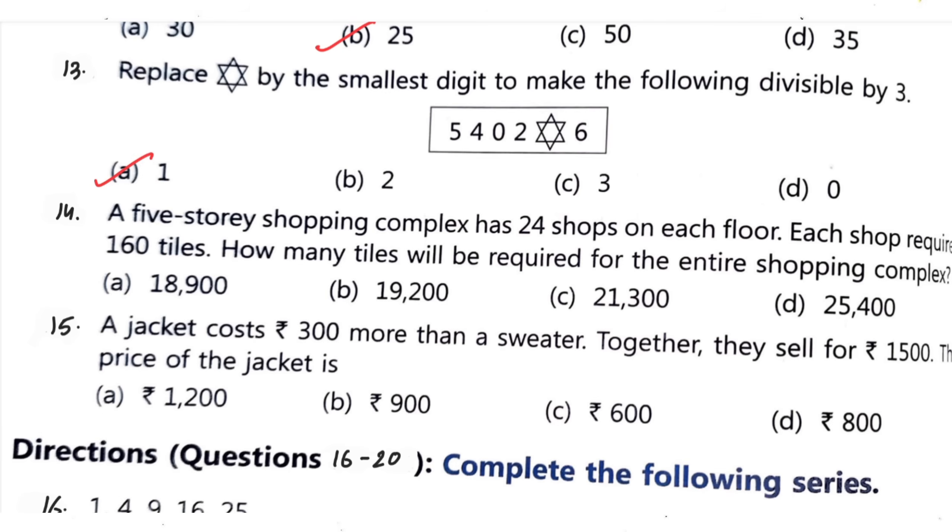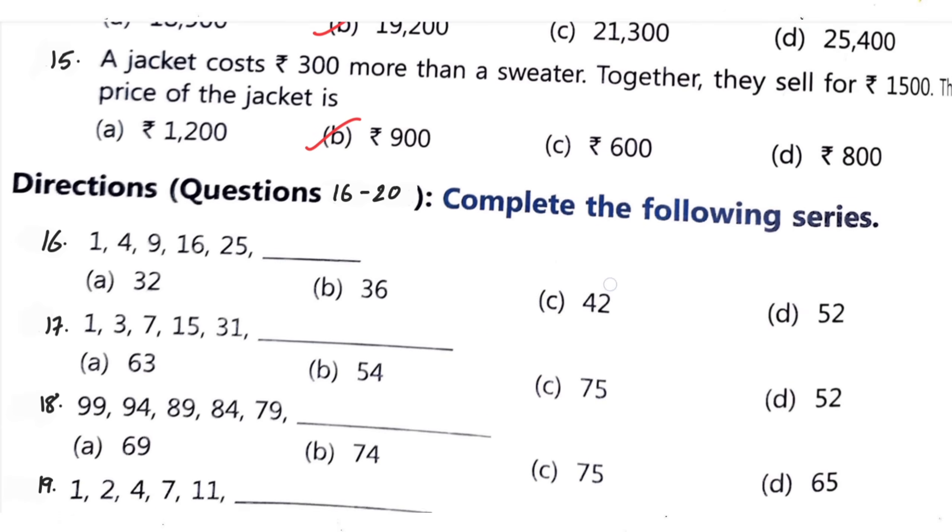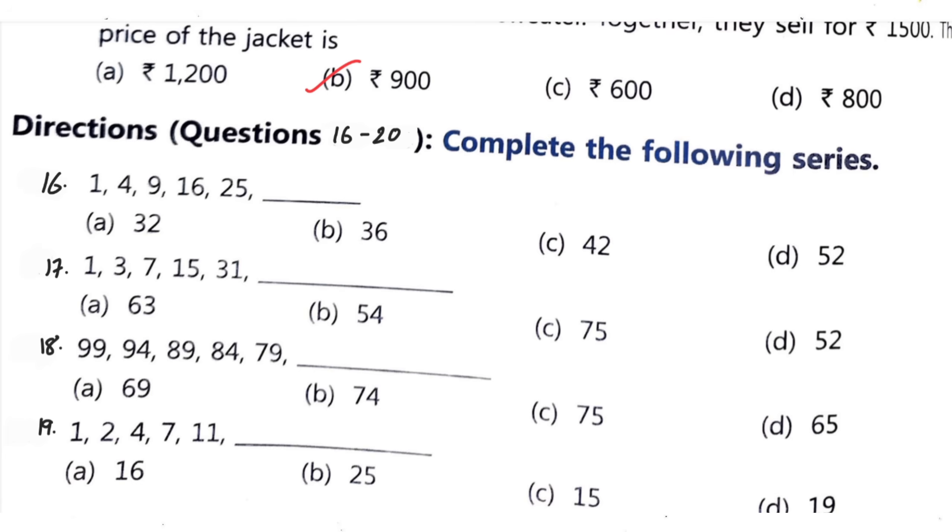Question number 14: a 5-storey shopping complex has 24 shops on each floor. Each shop requires 160 tiles. How many tiles will be required for the entire shopping complex? Your correct option is option B, 19200. Question number 15: a jacket costs 300 more than a sweater. Together they sell for 1500. The price of jacket is. Your correct option is option B, 900.